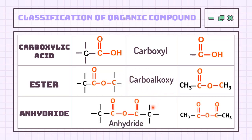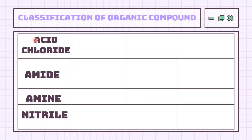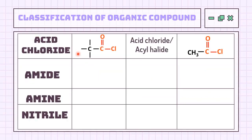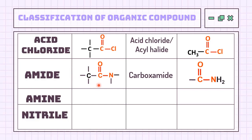A more complex structure where you can see two carbonyl groups and one alkoxy group combine to form the anhydride compound. The name of its functional group is also anhydride. Molecules with similar reactivity to carboxylic acid are known as acid chloride. Instead of having an OH group, it has chlorine directly attached to the carbonyl group. Moving to functional groups that contain nitrogen, we have the amide compound, where nitrogen is directly attached to the carbonyl group, so the functional group is called carboxamide.